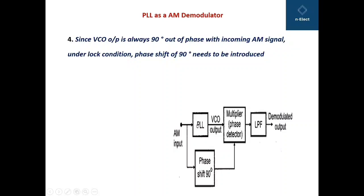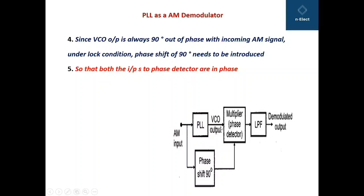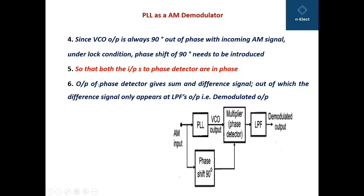Since the VCO output is always 90 degrees out of phase with the incoming AM signal under lock condition, a phase shift of 90 degrees needs to be introduced. Therefore we have applied a phase shift block of 90 degrees so that both inputs to the phase detector are in phase with each other. The output of the phase shift block gives sum and difference signals, out of which only the difference signal appears at the low pass filter's output, which is called the demodulated output.